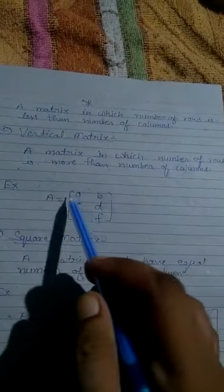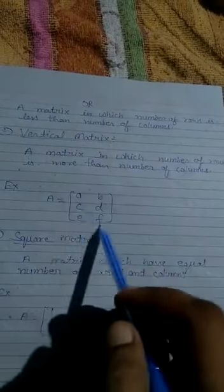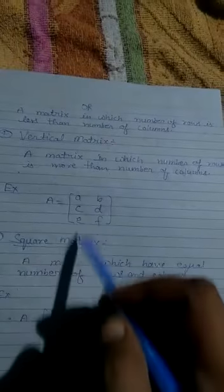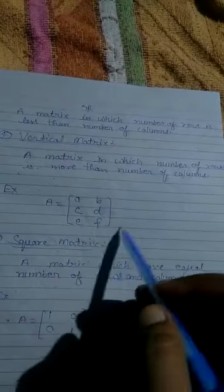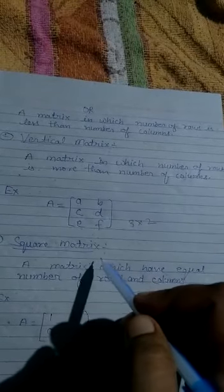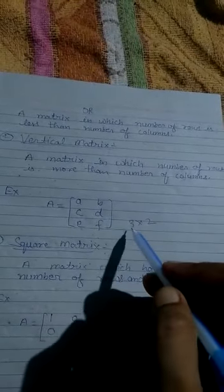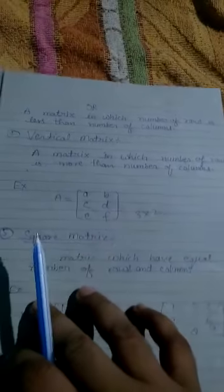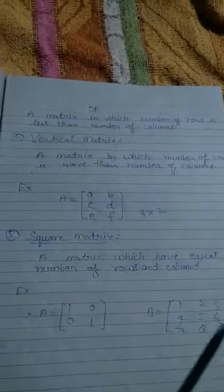For example, here [1 2; 3 4; 5 6], three rows and two columns, means 3×2. So it will be called vertical matrix.